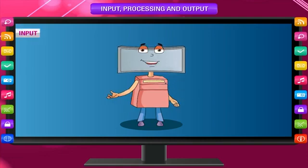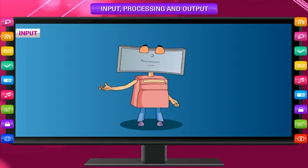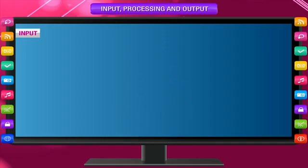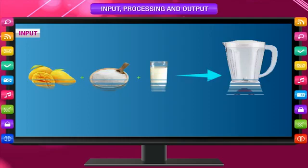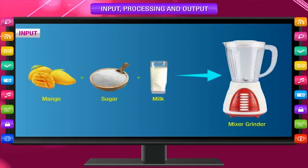Input: The thing that is given to a machine to work on is called input. For example, when you make mango shake, you put mango, sugar, and milk in the mixer grinder. These things are called input.